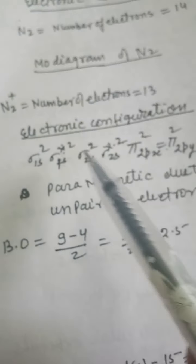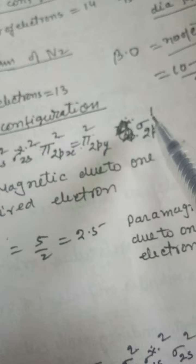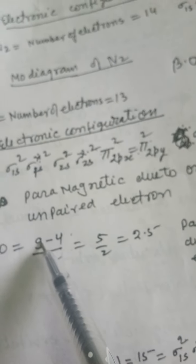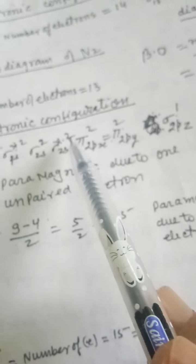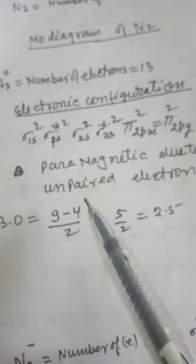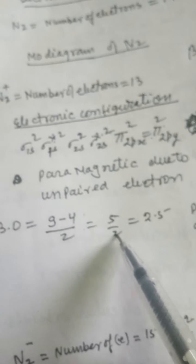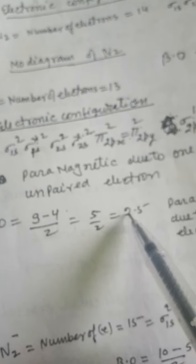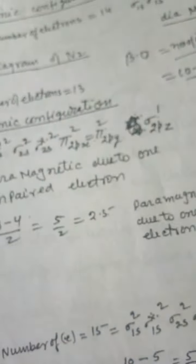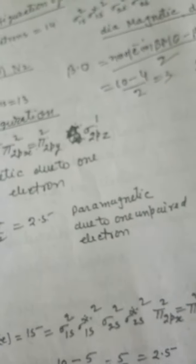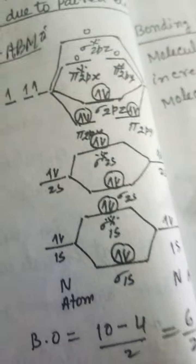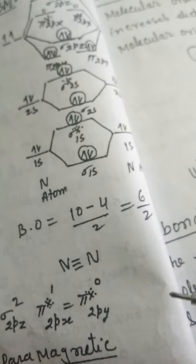Similarly, you can calculate the bond order of the N₂⁺ molecule ion. There are 9 electrons in bonding molecular orbitals and 4 electrons in anti-bonding molecular orbitals. So 9 minus 4 divided by 2 equals 5/2, which is 2.5. Therefore, there are 2.5 bonds in the N₂⁺ molecule ion, and this molecule is paramagnetic. Now let us look at the molecular orbital diagram.